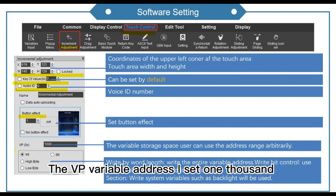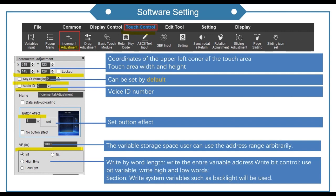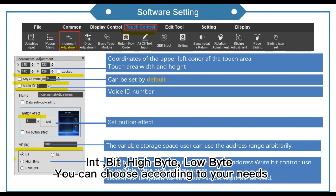You can set button effect. The VP variable address I set 1000. For int, bit, high byte, low byte — you can choose according to your needs.